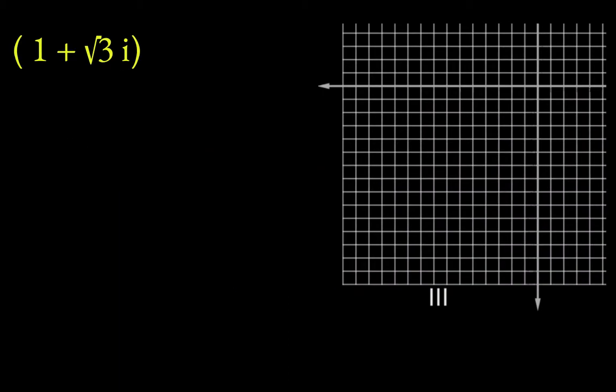So first thing we'll do is actually plot the complex number to the first power before we do anything with it. And so what you notice is this complex number, you go over 1 and up root 3 along the imaginary axis. So that's what this would look like in the complex plane.